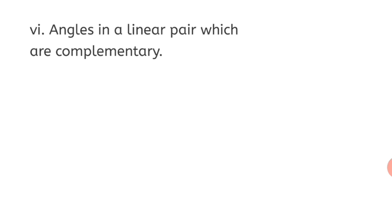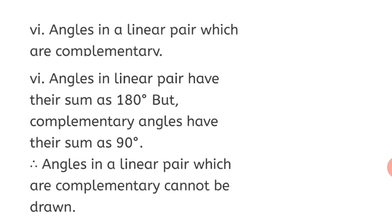Question 6: Draw angles in a linear pair which are complementary. Angles in a linear pair always have a sum of 180 degrees, but complementary angles have a sum of 90 degrees. Therefore, angles in a linear pair which are complementary cannot be drawn. You must write down the solution with the reason: if they cannot be drawn, explain why. If they can be drawn, show it with suitable measures.